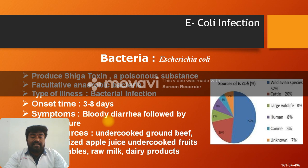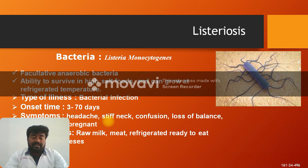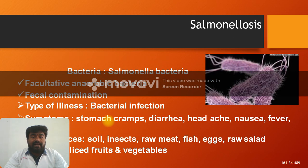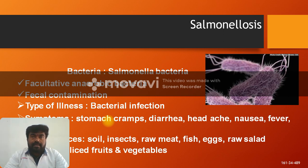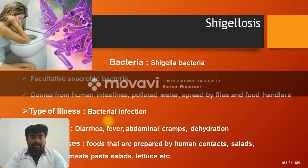Listeriosis is caused by Listeria monocytogenes bacteria. Salmonellosis is caused by Salmonella bacteria, which is a facultative anaerobic organism. Symptoms include diarrhea, headache, nausea, and fever. Shigellosis is caused by Shigella bacteria, also a facultative anaerobic bacterium. Symptoms include fever, abdominal cramps, and dehydration.